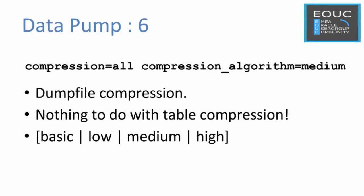The compression and compression_algorithm parameters can be used to determine how the dump file is compressed. This has got nothing to do with table compression, just the dump file. You can either use basic, low, medium, or high. Pick one that gives you the level of compression you need without severely impacting on performance.